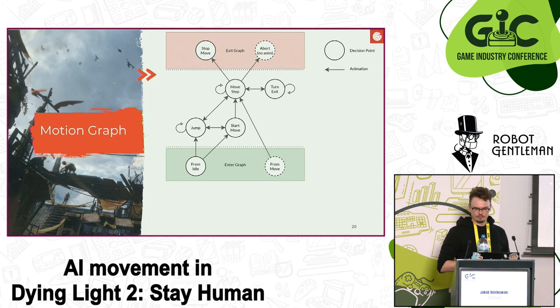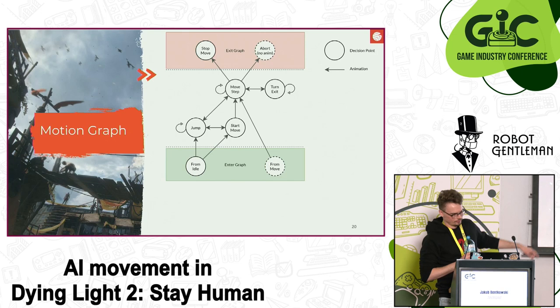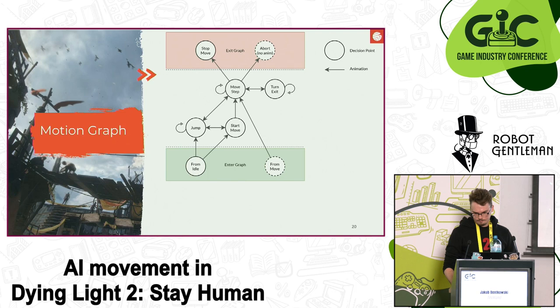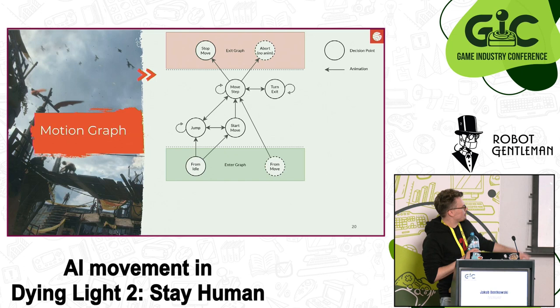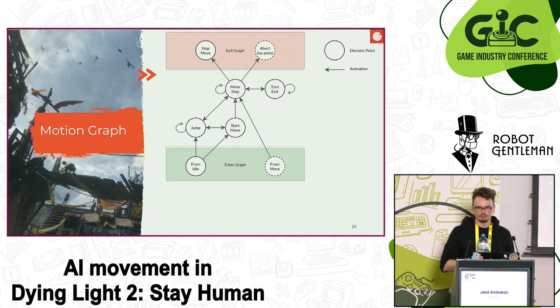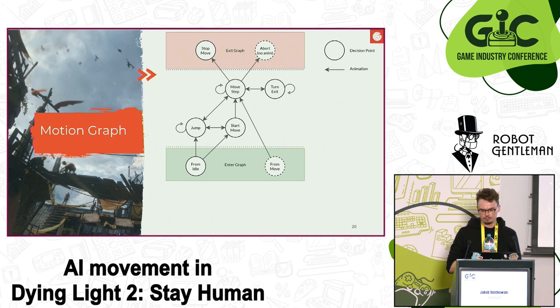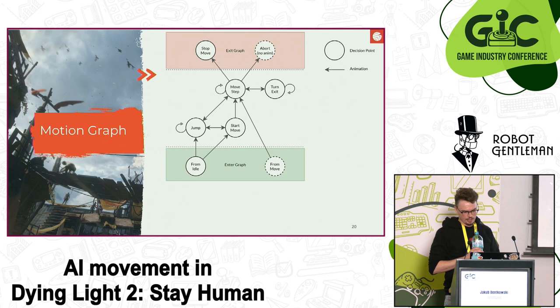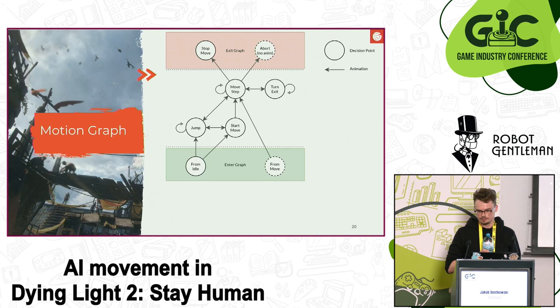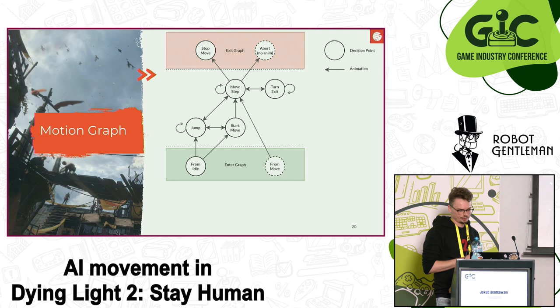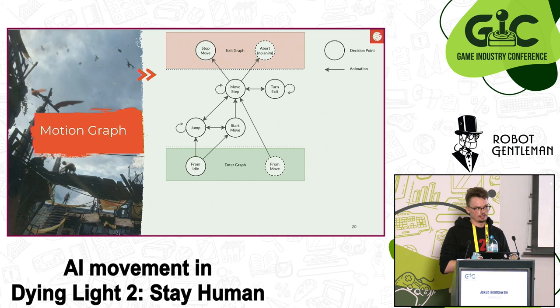From outside the system, we can enter the motion graph in two ways: from idle or from move. From idle, we can start either by jumping or by playing a start animation and then running. From move is used to enter locomotion from an external system like a cutscene. We can then cycle through jumps, turns, and run cycles, and transition back out either by playing a stop animation gracefully or by aborting at any moment and letting the external system handle blending. Not every decision point is connected with a dedicated transition, meaning some transitions are impossible to make directly.